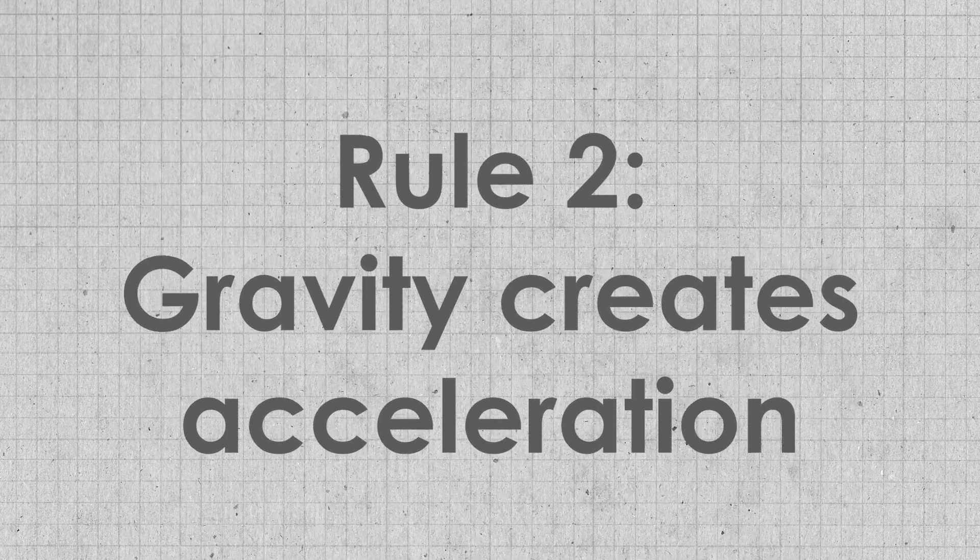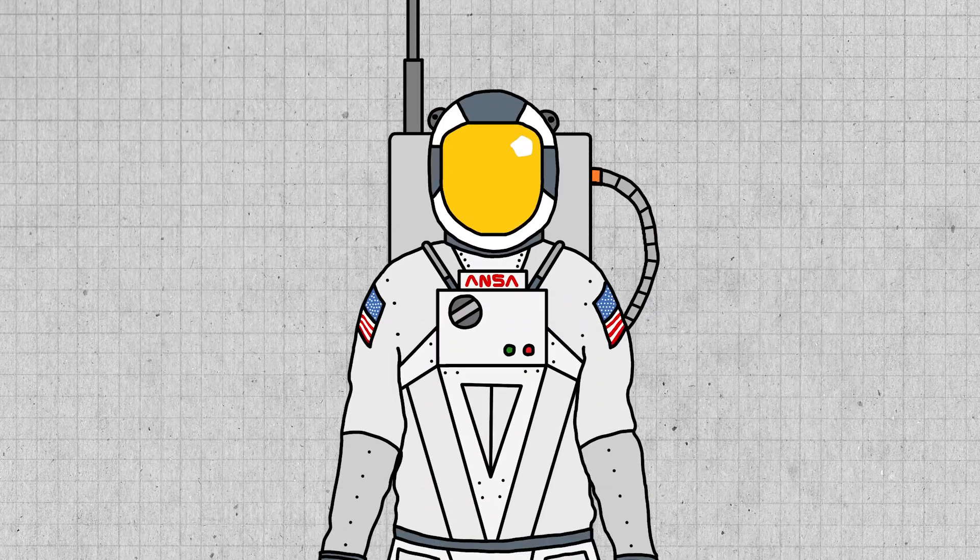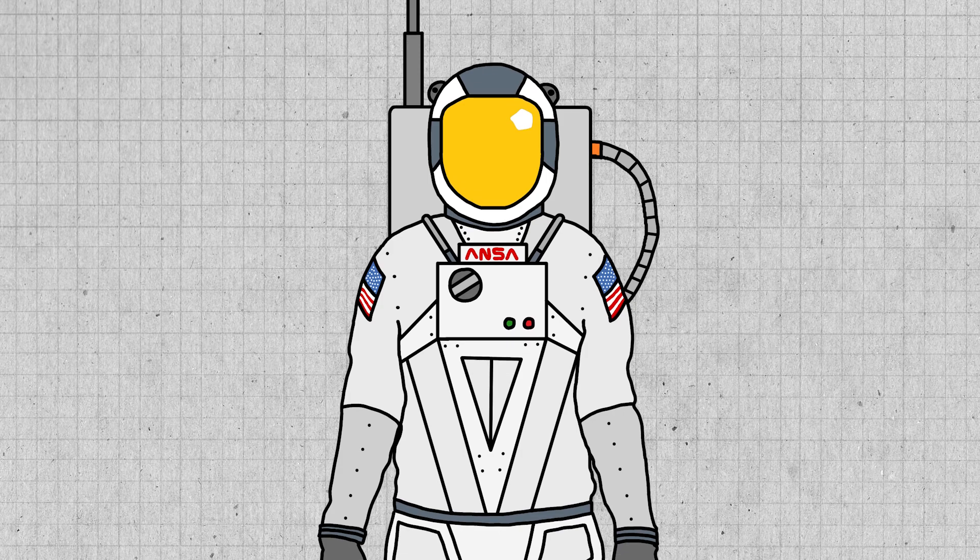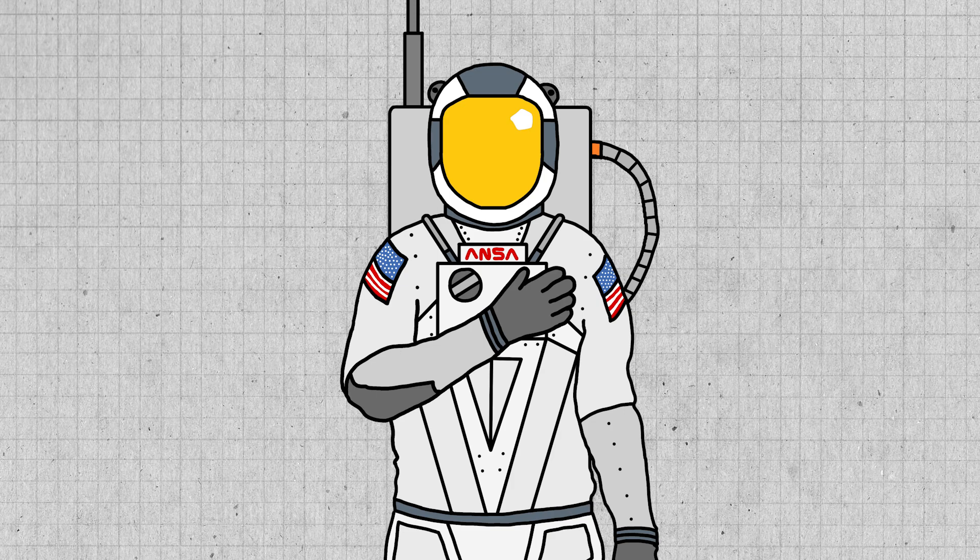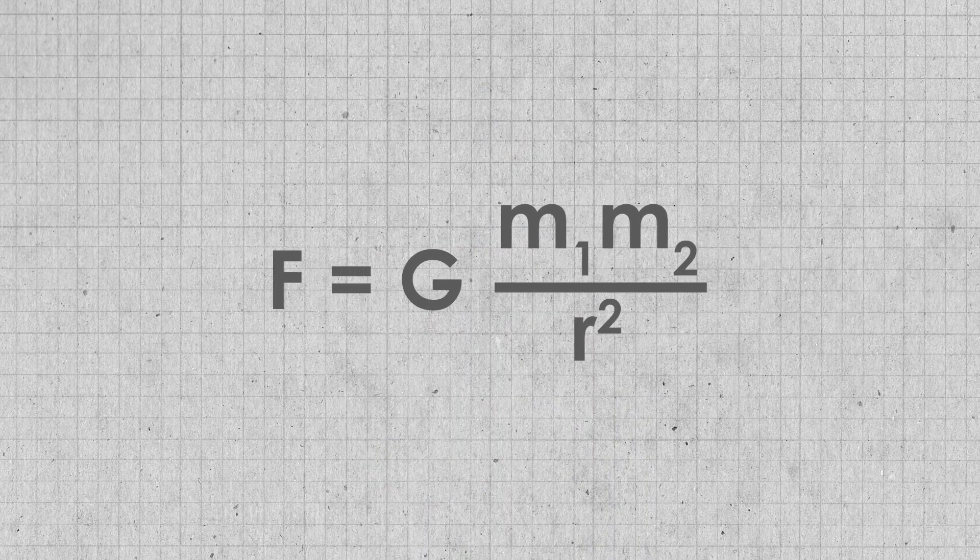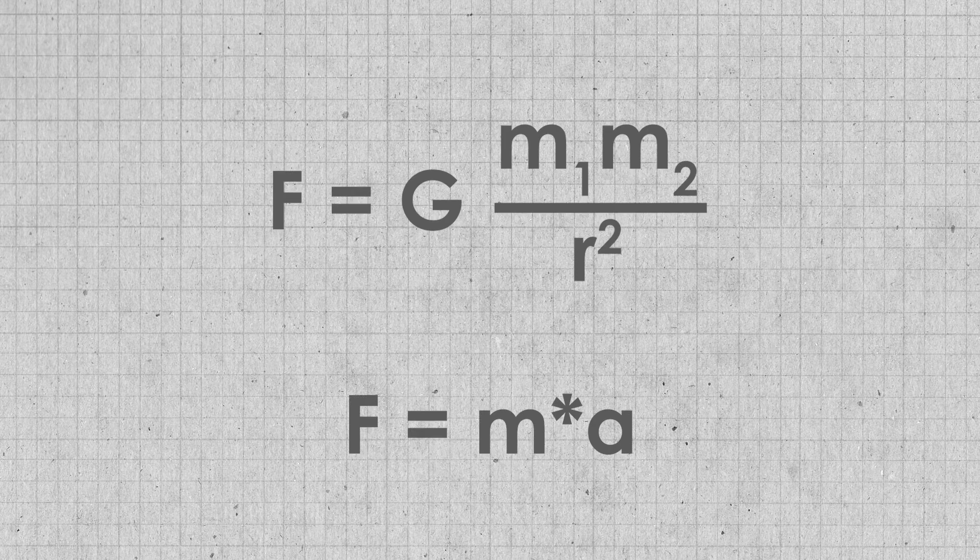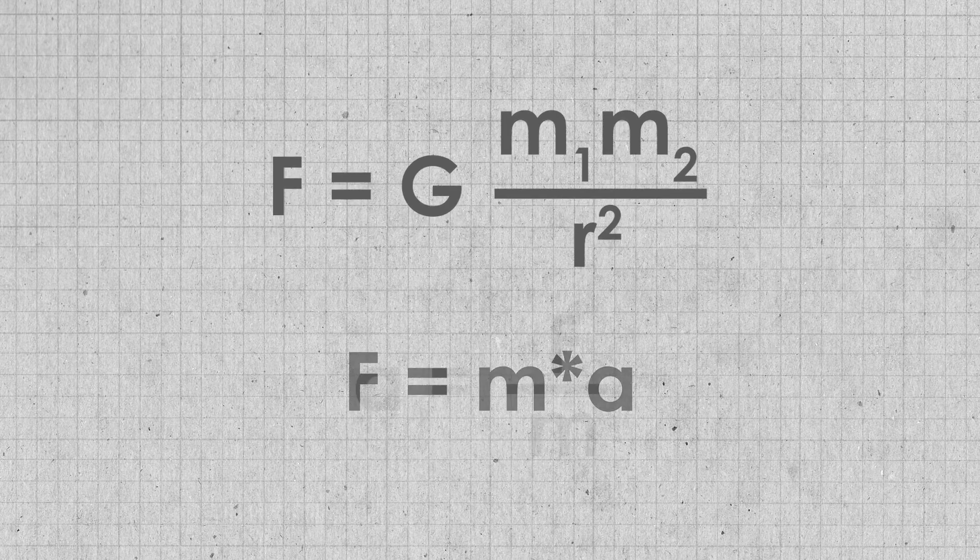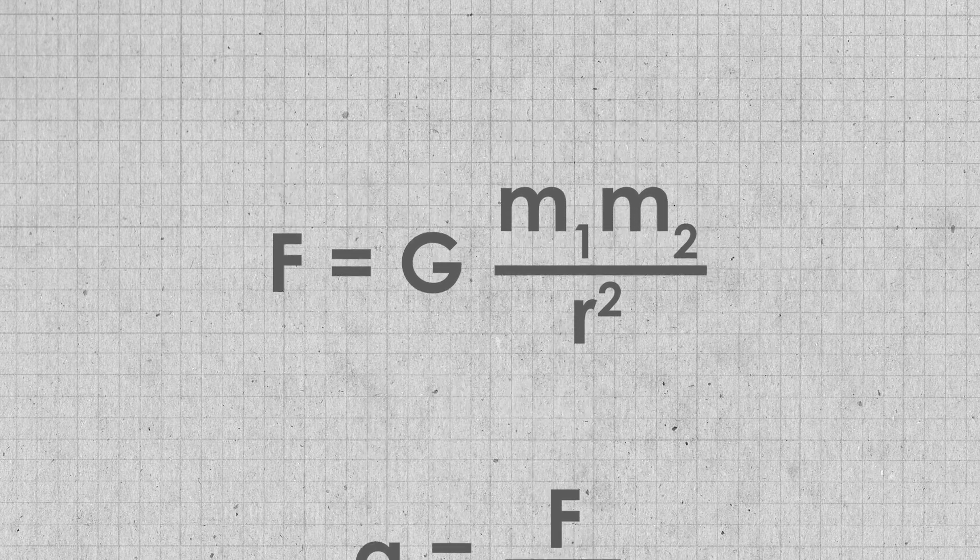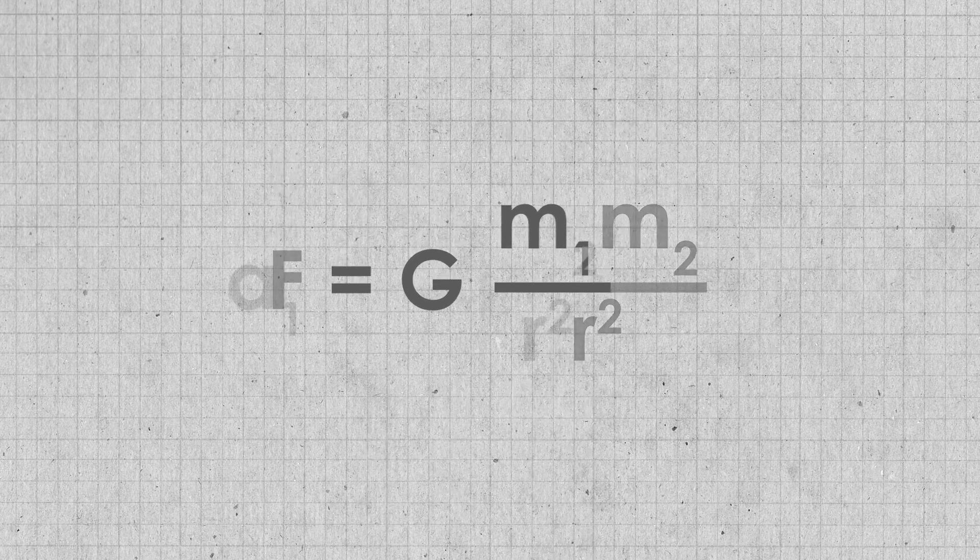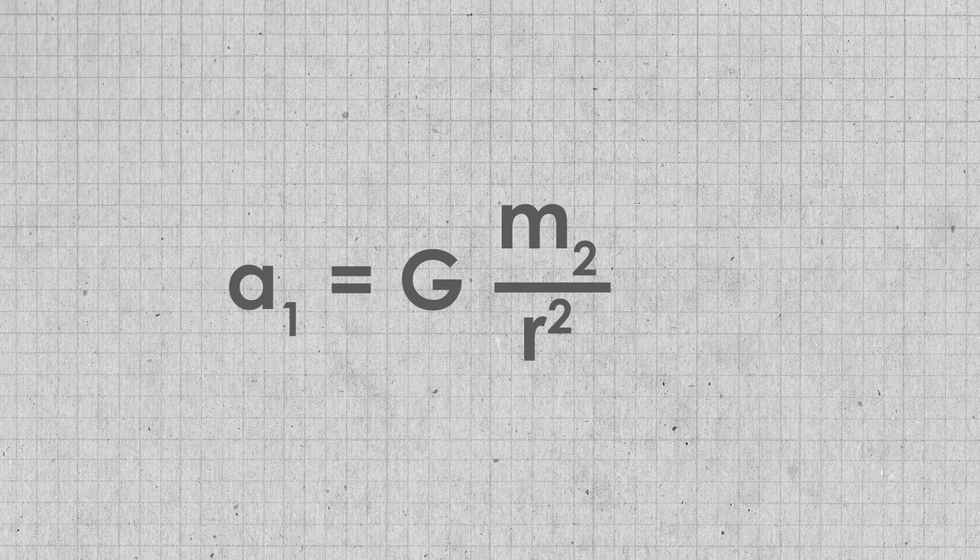Rule number two: Gravity creates acceleration. This one's a bit more complicated in the code because we have to calculate the gravity produced by each object on each object. But at its heart, it's just a modified version of the gravity equation. We know that force equals mass times acceleration, so acceleration must equal force divided by mass. That means we can just divide out the mass of the body we're looking at and only use the mass of the body it's being attracted to.